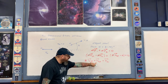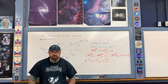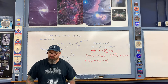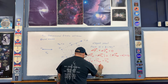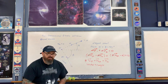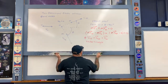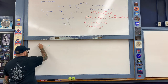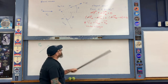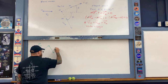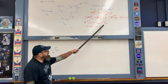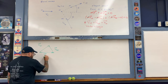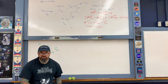Notice that the two final velocity vectors add together to produce the initial velocity vector. This equation represents vector addition, and recall that when two vectors add to form a third, the result is a vector triangle. Using the tail-to-tip method of vector addition: v1 final plus v2 final gives the resultant v1 naught, the initial velocity of the first object. So conservation of momentum gives us this vector triangle.